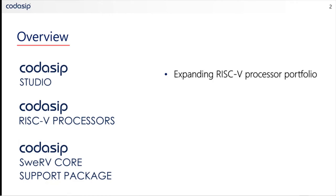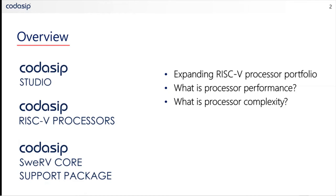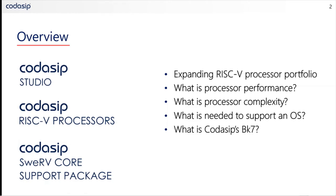In this series, we're going to be introducing the topic. We're going to look into a number of questions such as what is processor performance, what is processor complexity, what is needed to support an operating system, and what is the new Codisip BK7. We're also going to look into how to interpret PPA numbers so that they're used in a meaningful way in choosing a processor core. Then we will draw the series to a conclusion.